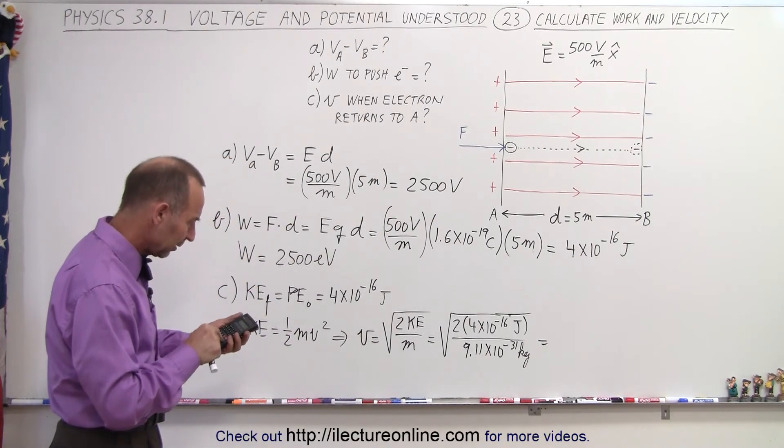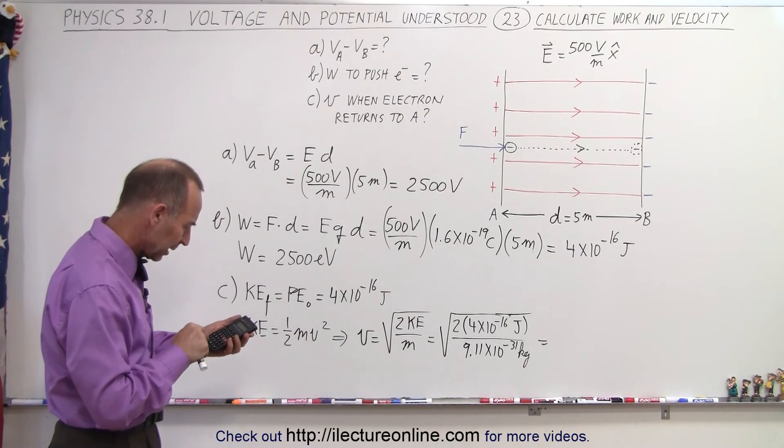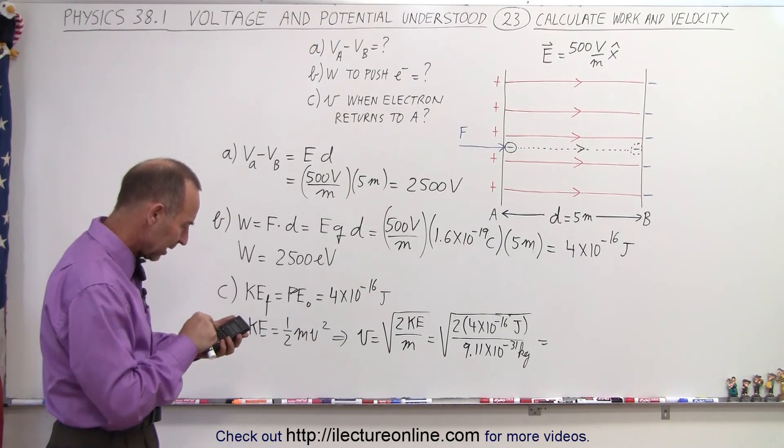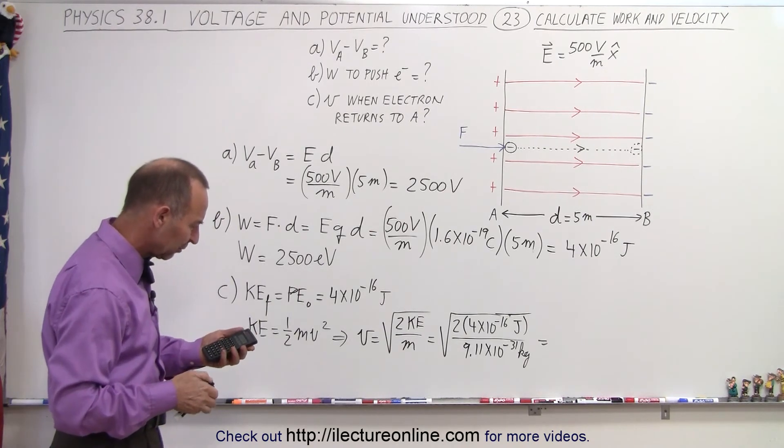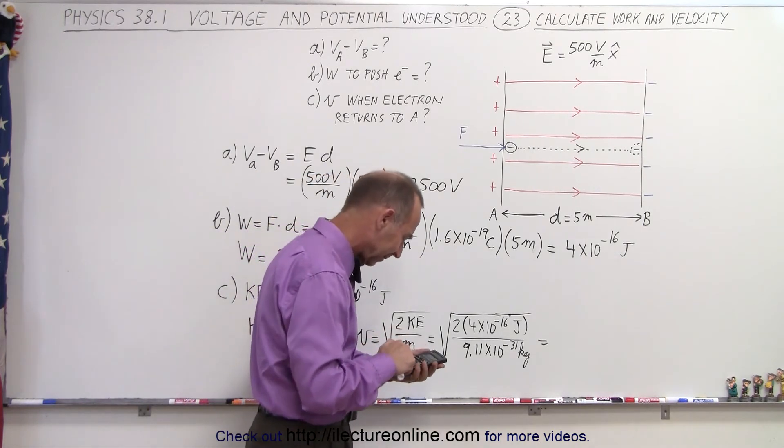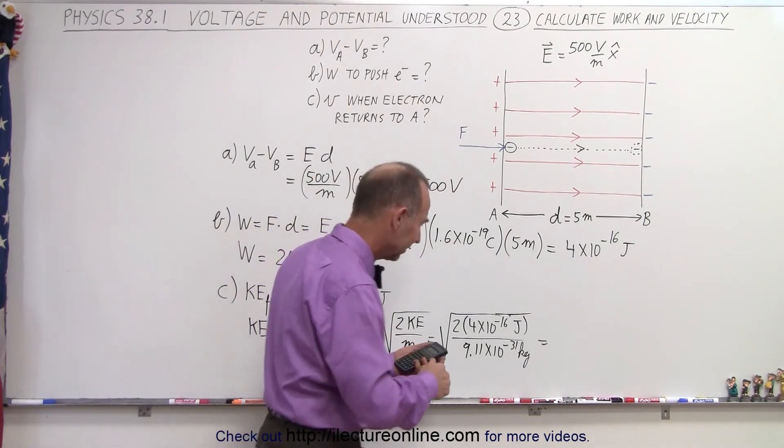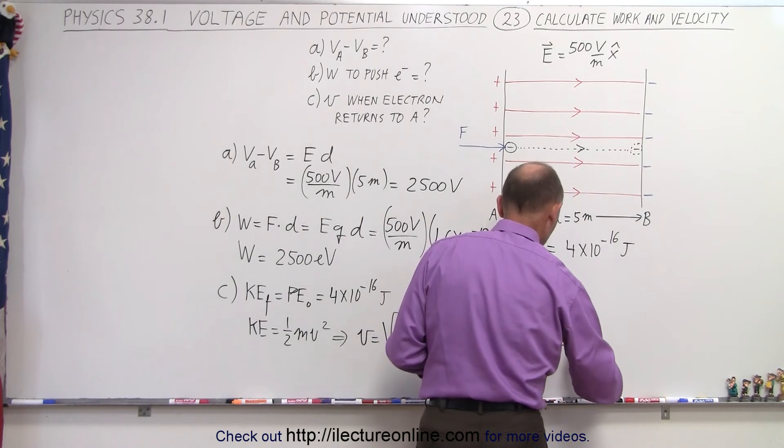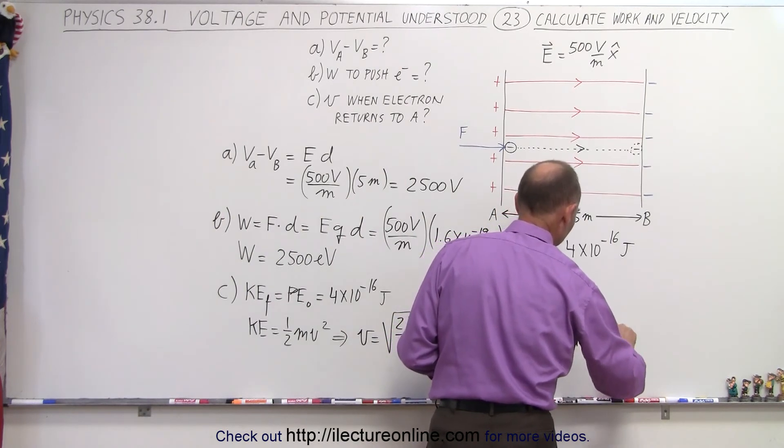So multiply times 2, divide by 9.11 E to the 31 minus, and then take the square root, which gives us 2.96 times 10 to the sixth meters per second.